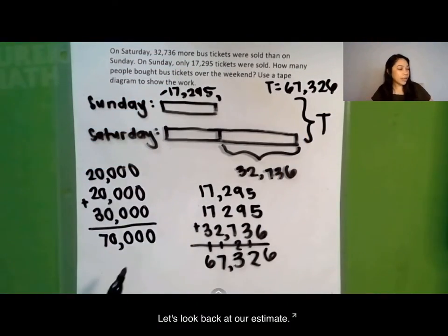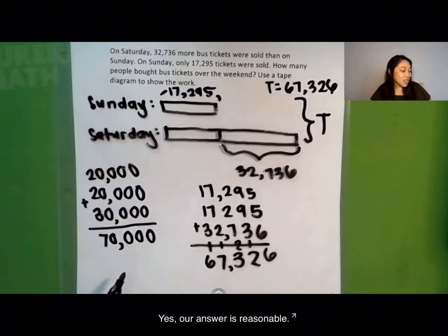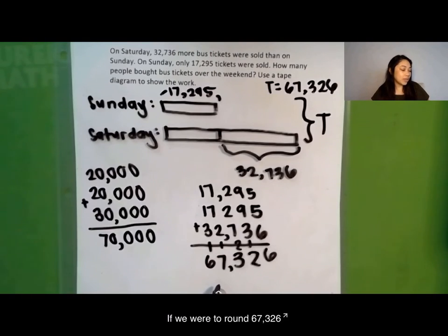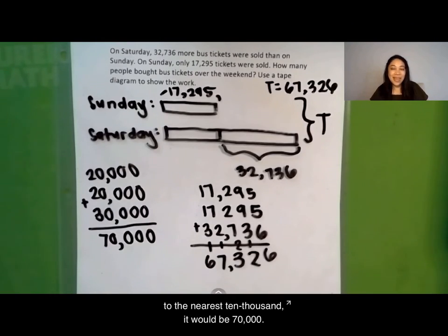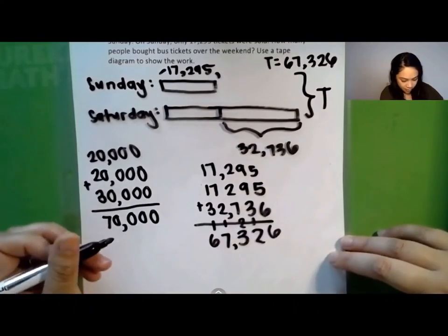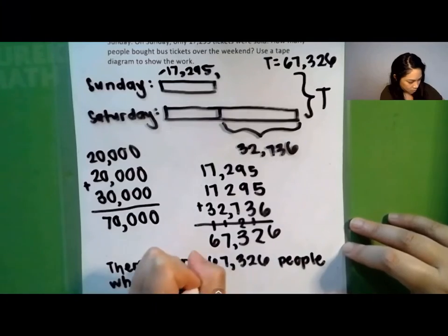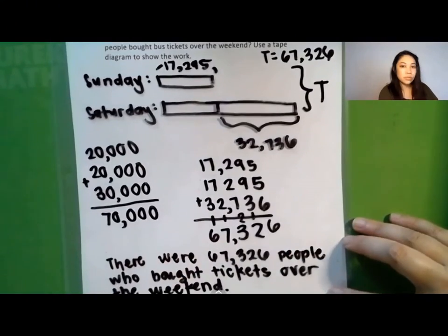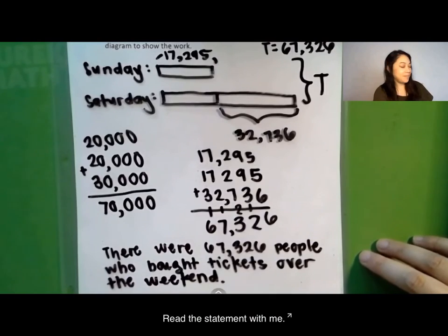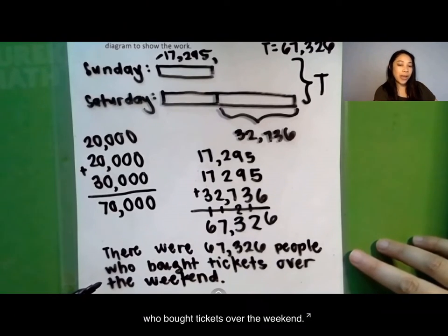Let's look back at our estimate. Is our answer reasonable? Yes, our answer is reasonable. If we were to round 67,326 to the nearest 10,000, it would be 70,000. Let's now write a statement to answer the question. Read the statement with me: There were 67,326 people who bought tickets over the weekend.